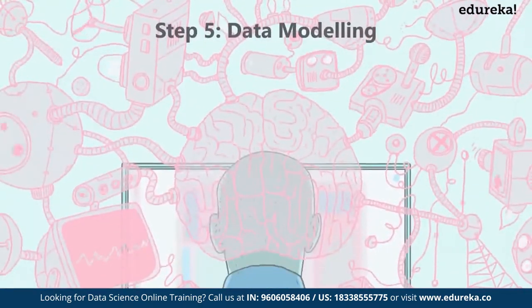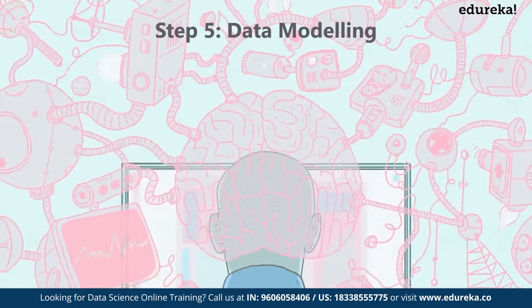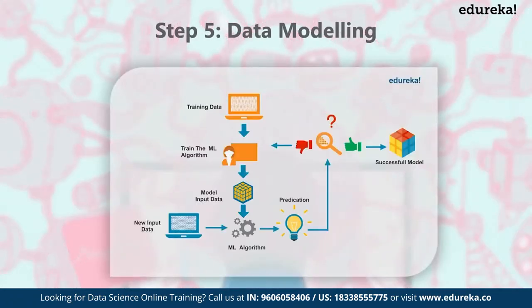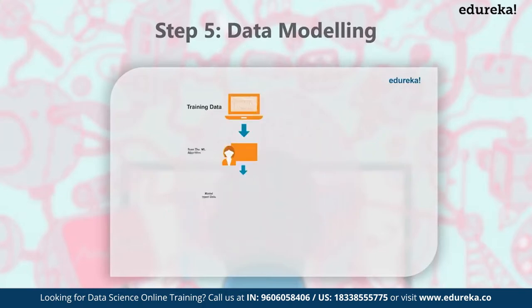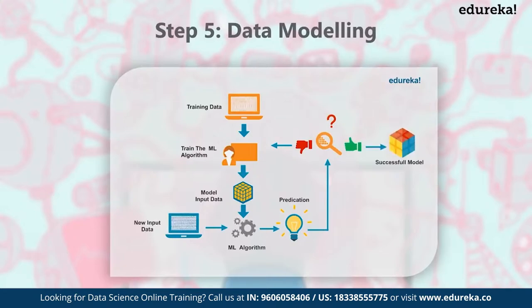This is followed by data modeling. The data modeling stage basically includes building a machine learning model that predicts the Uber surge at a given time and location. This model is built by using all the insights and trends collected in the exploration stage. The model is trained by feeding thousands of customer records so that it can learn to predict the outcome more precisely.